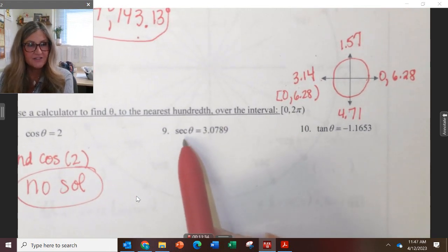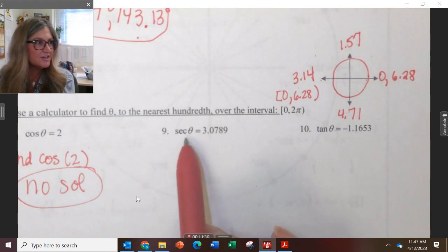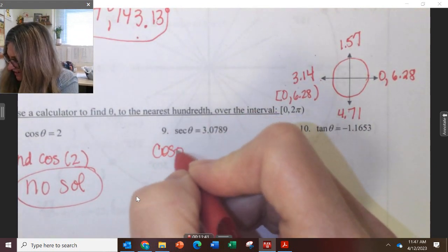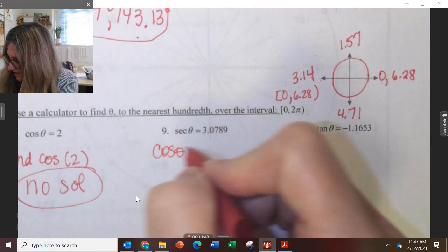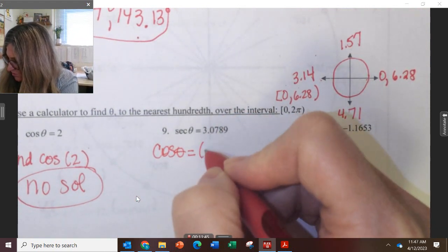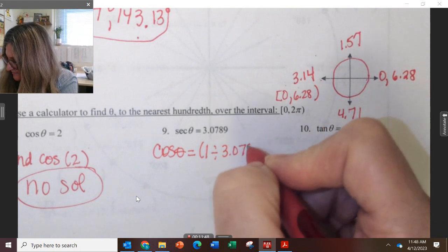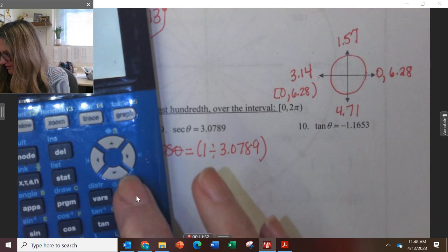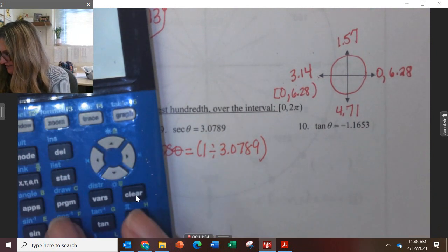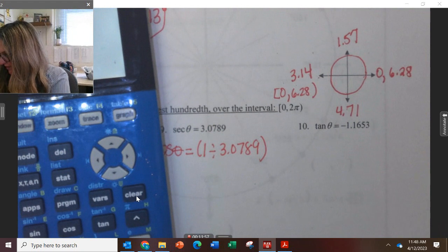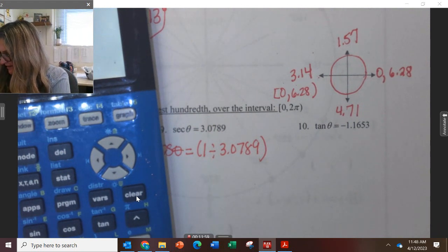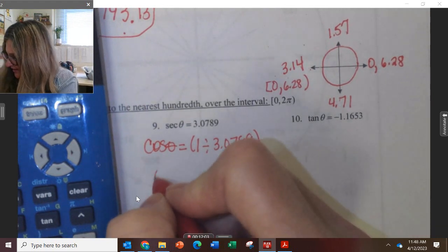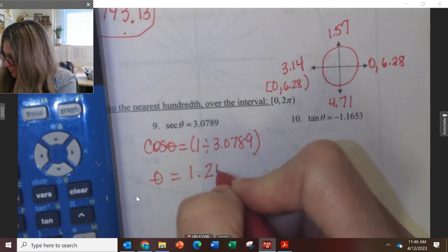Now let's do one that does have a solution. What am I going to have to change this to? Cosine. So to change it to cosine, I have to do cosine theta equals 1 divided by this. So we're going to type in, clear it all out, second cosine 1 divided by 3.0789, and here is our answer, 1.24.